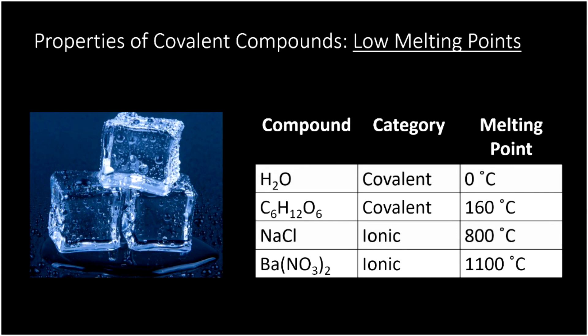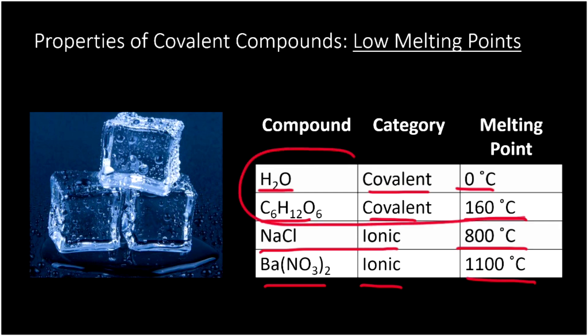Let's now think about some of the properties that covalent molecules have. Well first, they have low melting points, particularly in contrast to ionic compounds. We've already seen that sodium chloride, which is ionic, has a melting point of 800 degrees Celsius. Barium nitrate, another ionic compound, has a melting point of 1100 degrees Celsius. Meanwhile, water, which is a covalent compound, melts at zero degrees Celsius. And sugar, which is a covalent compound, melts at 160 degrees Celsius. So what we see here is that the covalent compounds tend to have much lower melting points.